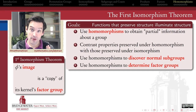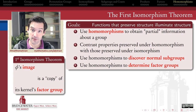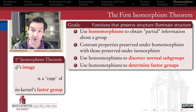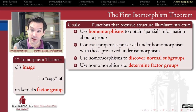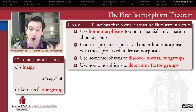We're finally ready to see how the first isomorphism theorem gives us a way of understanding the structure of a group by looking at homomorphisms that come out of that group. The key ingredients so far are the fact that kernels of homomorphisms are normal subgroups of the domain, and conversely, every normal subgroup is the kernel of some homomorphism. But it's not just the kernel — the image of a homomorphism also plays an important role in characterizing structure.